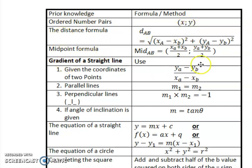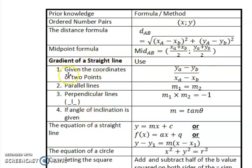Distance formula — you should be very familiar with Pythagoras. Midpoint formula. The gradient: there are four different types of gradients that we can get. Firstly, if they give me the two coordinates, I can calculate the gradient in the following way.